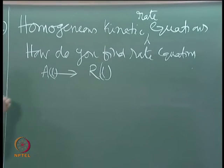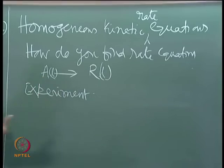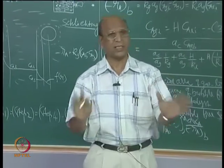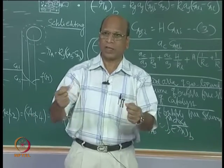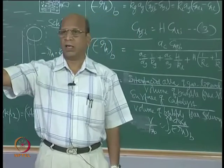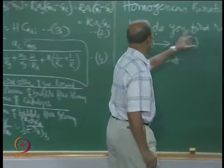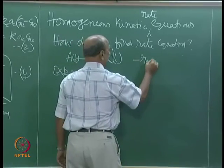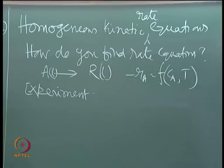Experiment is a must because we do not have theory to predict what kind of rate you will get for a given stoichiometry. If you know the theory, you do not have to do experiments. What we are trying to find out is the format of minus R_A - its functional dependence on C_A and T.